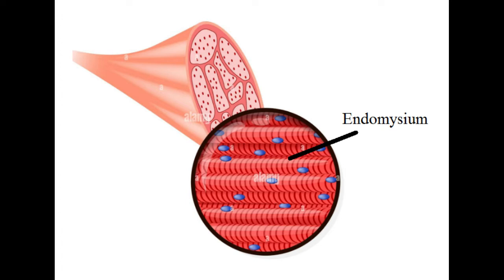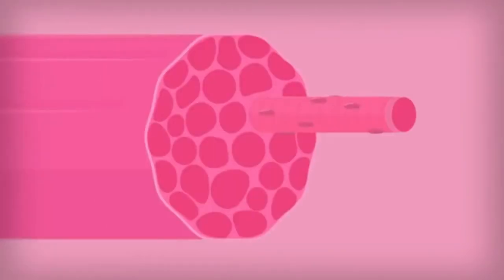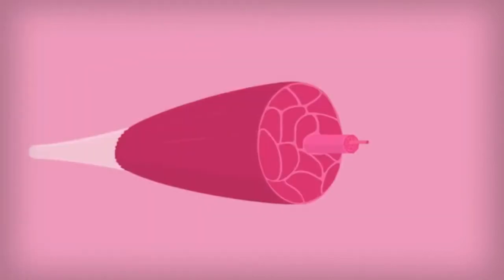Here you would see the individual muscle fibers, each of which is what we'd call a muscle cell. A muscle cell has many nuclei. It has the same organelles as other cells like lysosomes and mitochondria. Endomysium surrounds a muscle cell. It is the innermost covering of a muscle and its function is to separate a muscle fiber from its adjacent fiber. To recap, bundles of myofibrils form a fascicle and many fascicles form a muscle.